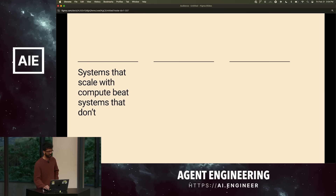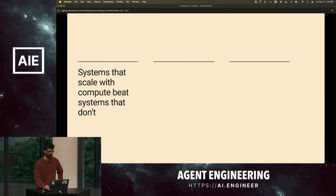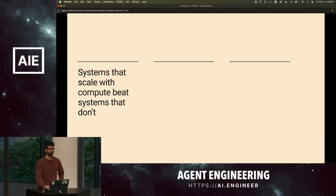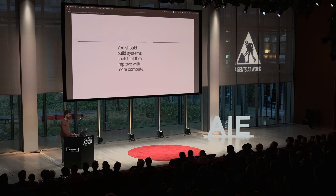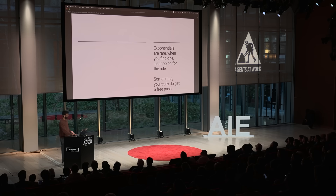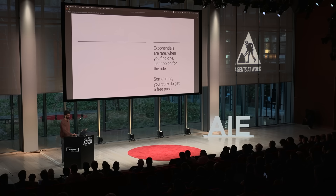Very simply, the idea is that systems that scale compute beat systems that don't. So if two systems exist and one can just think more or use more compute in some way, that system tends to beat systems that are rigid, fixed, and deterministic. From that idea, it's pretty clear that if you're building systems, you might as well build systems that improve with more compute. And this is the obvious conclusion from the bitter lesson. It's because exponentials are rare — they just don't exist in most things in the world — so when you find one, you should just hop on and take the free pass.